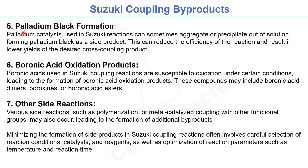The fifth byproduct is palladium black formation. Since palladium is used as a catalyst in this reaction, it can sometimes aggregate or precipitate out of solution, forming palladium black as a side product. This reduces the efficiency of your reaction and can result in low yields of the desired cross-coupling product.